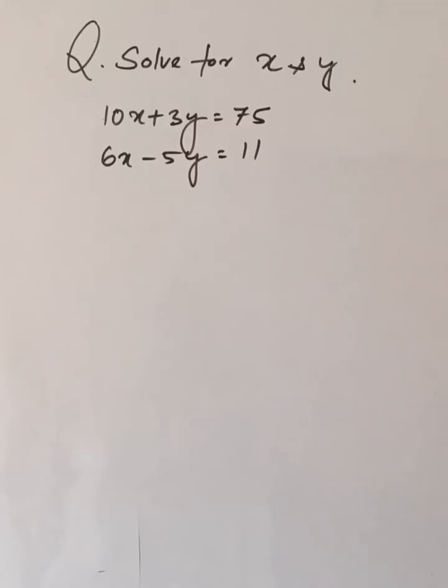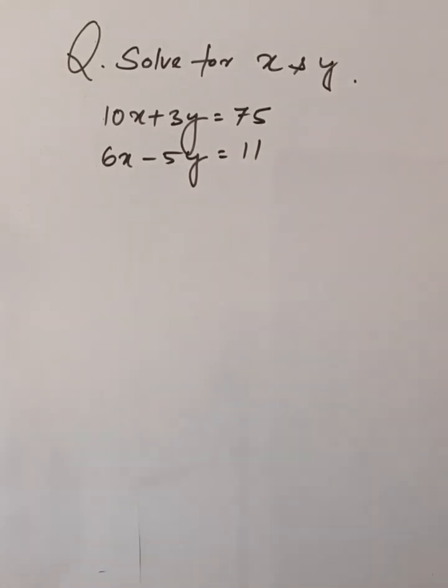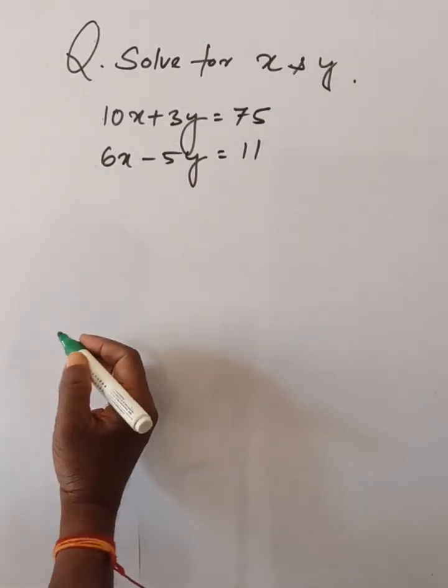Solve for x and y: 10x plus 3y is equal to 75, and 6x minus 5y is equal to 11.